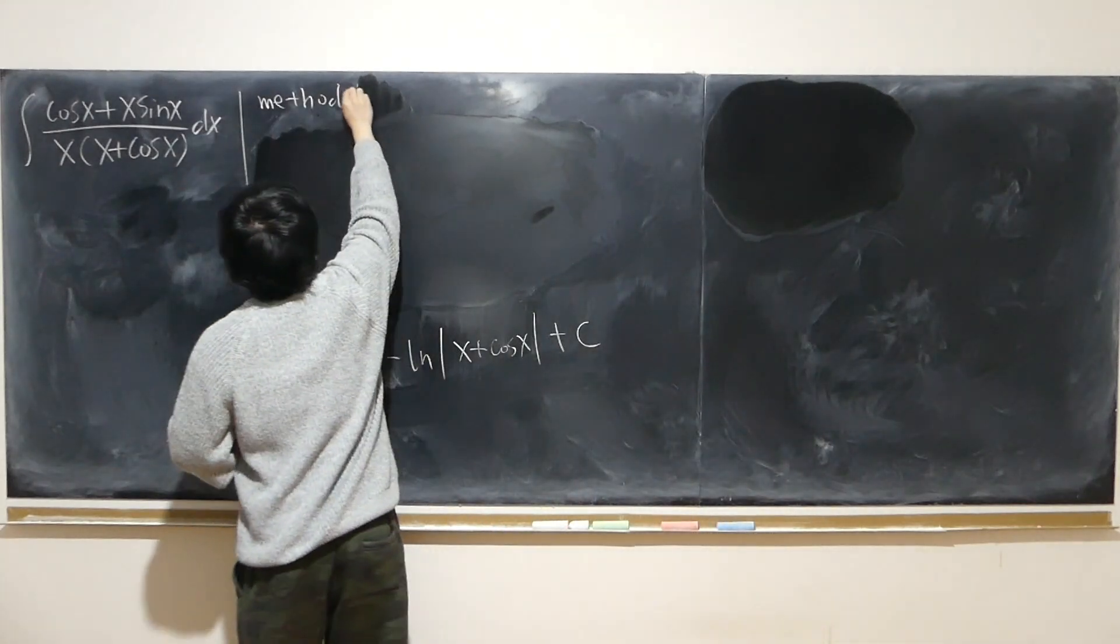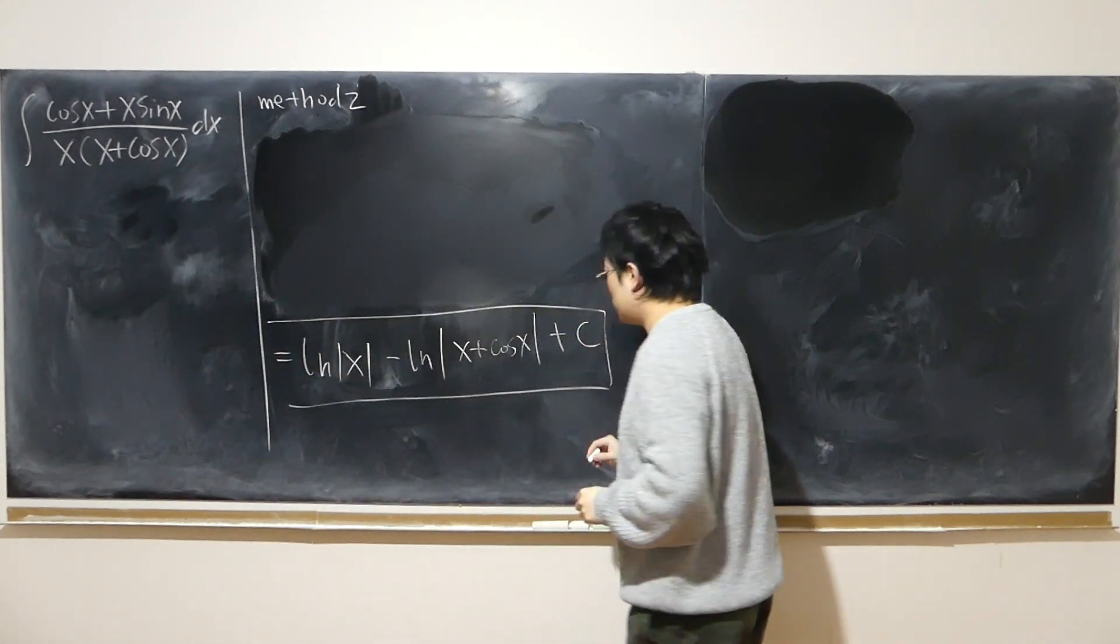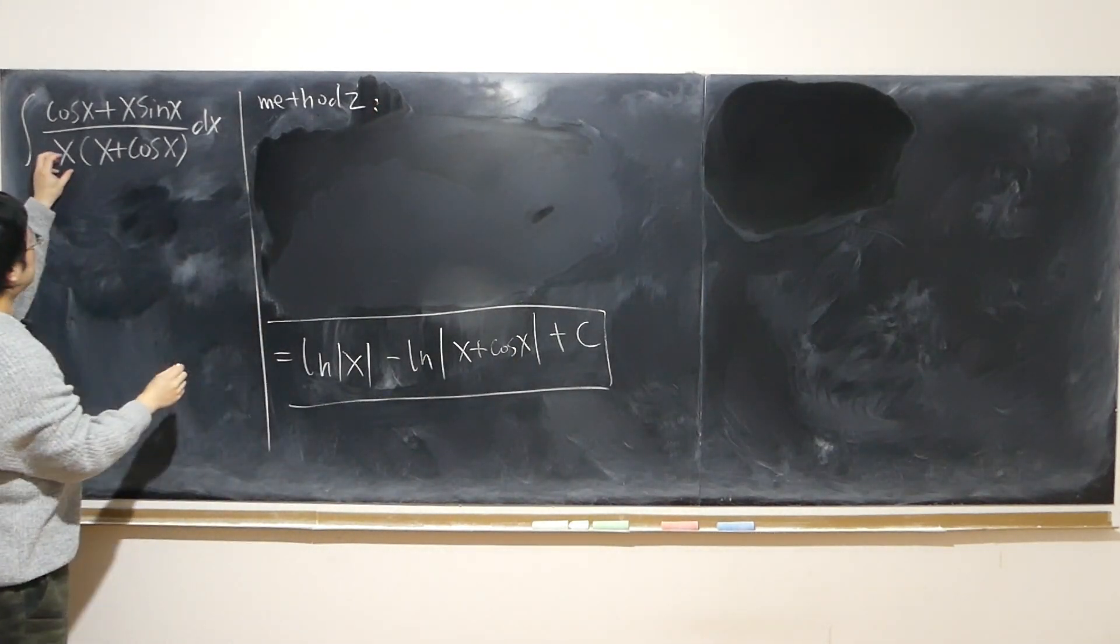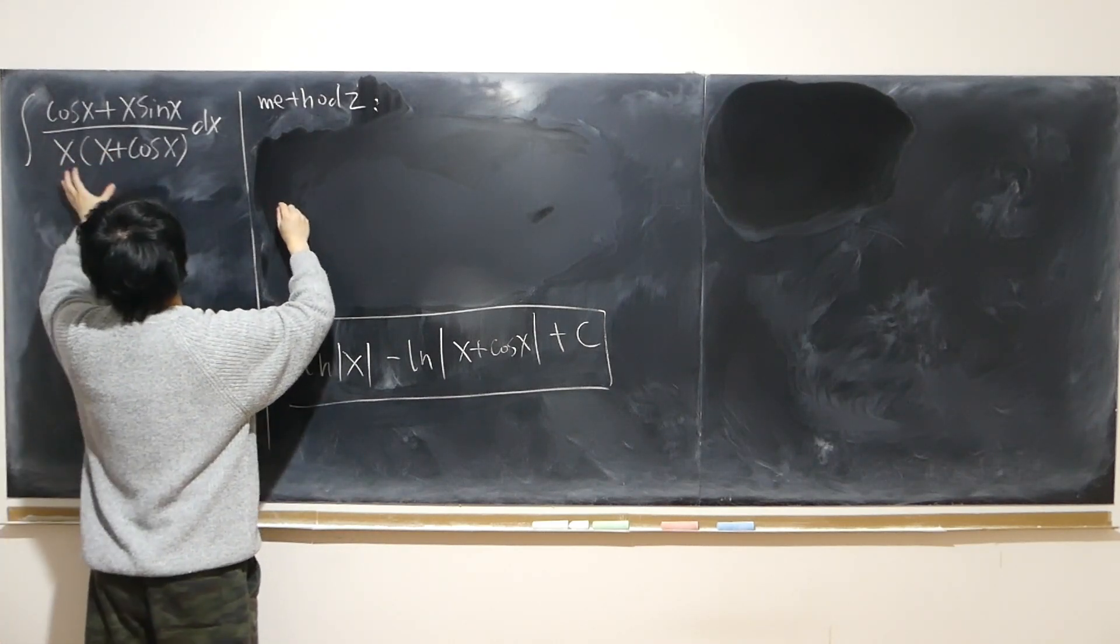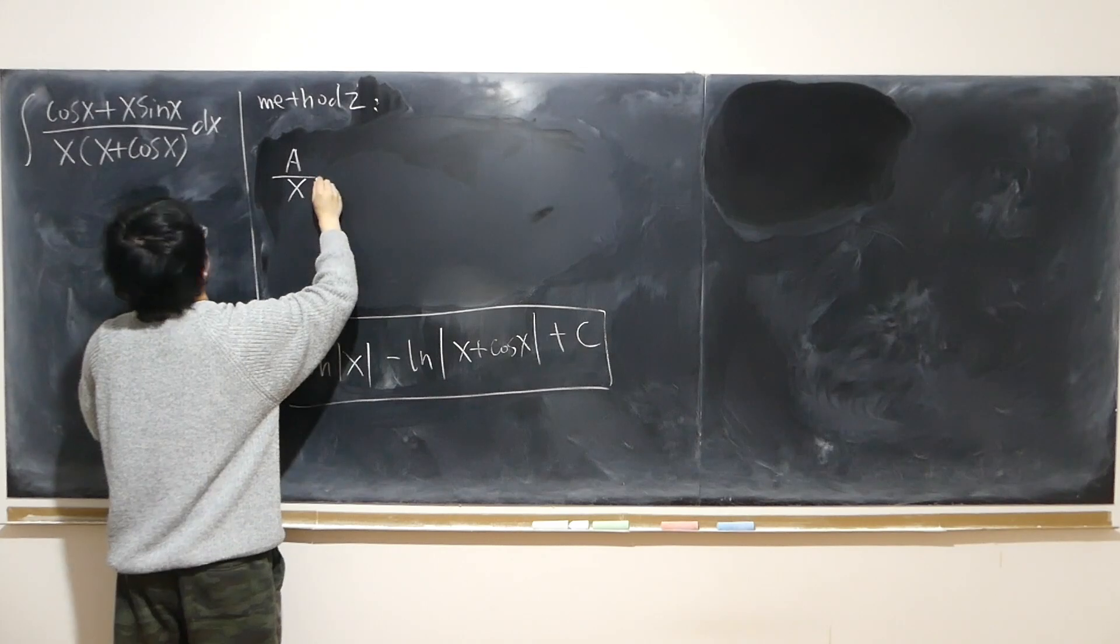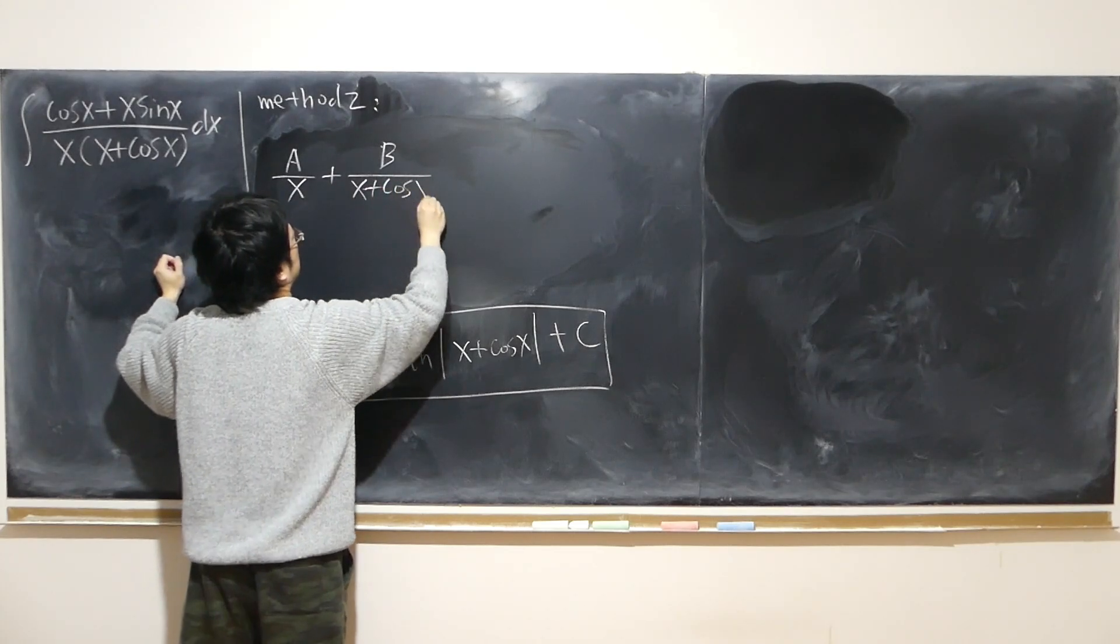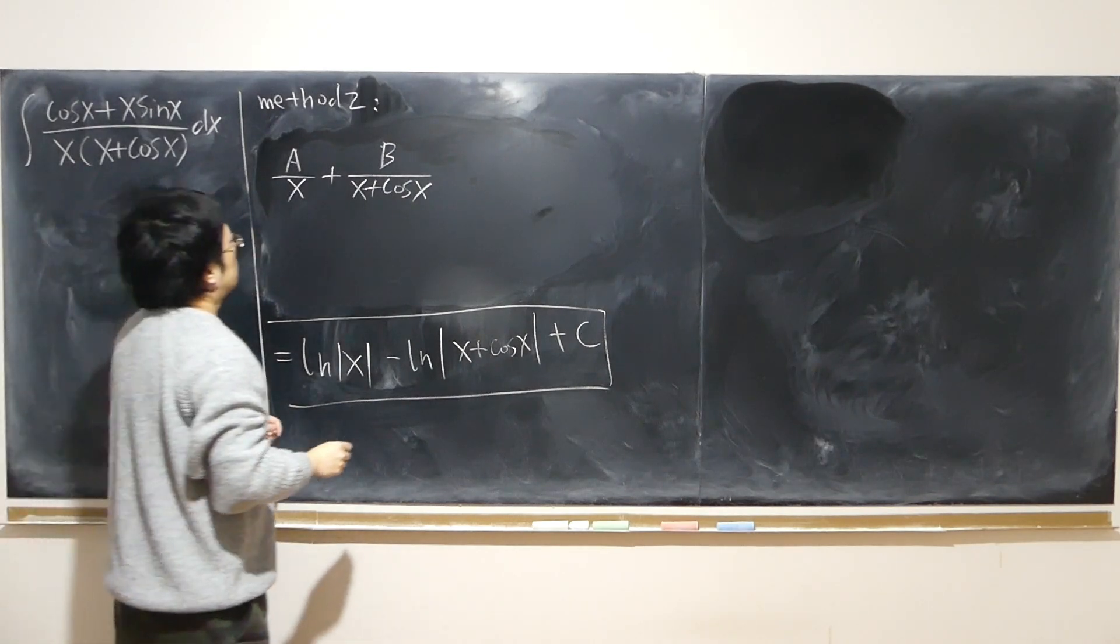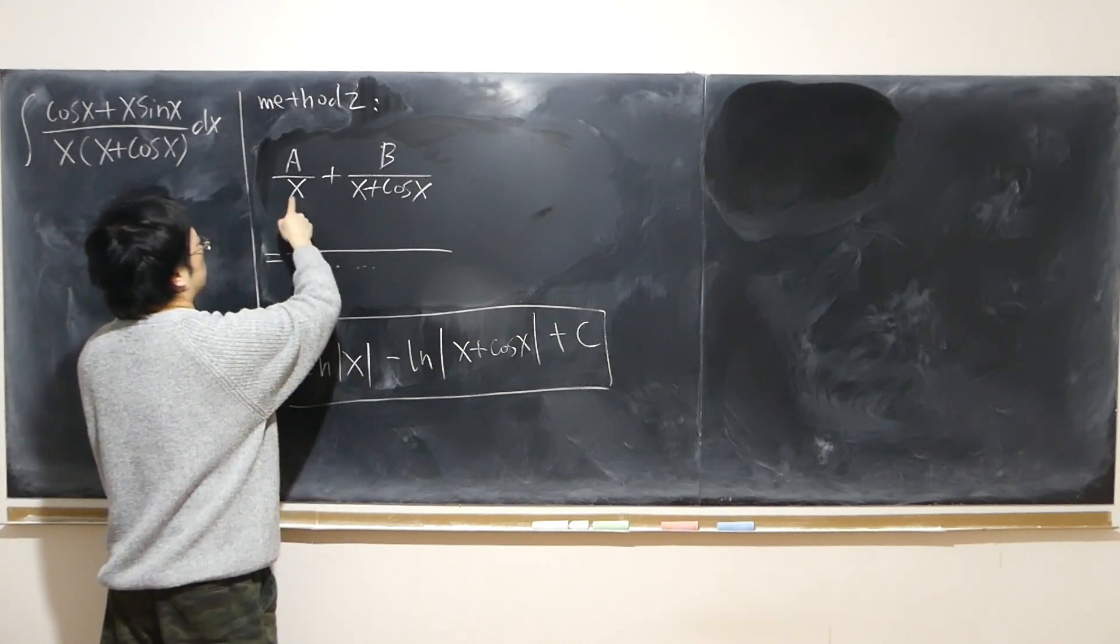Okay, so let's have a look at method 2. And let me just note the result and see if we can get the same result. So second method. So momentarily, so this times that, I want to use partial fraction. Kind of partial fraction. So I can just let a over x plus b over x plus cosine x.